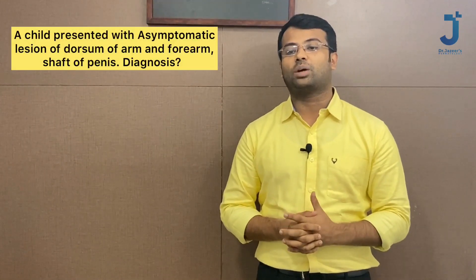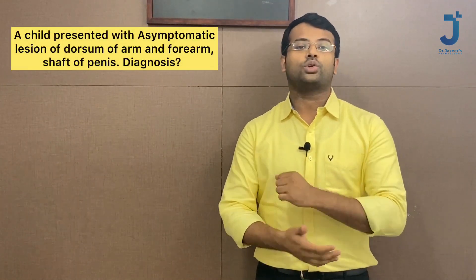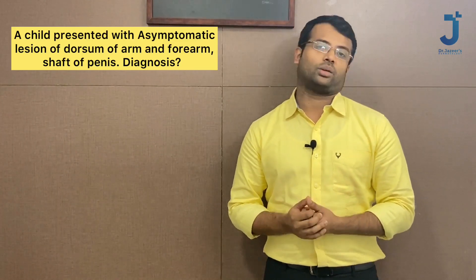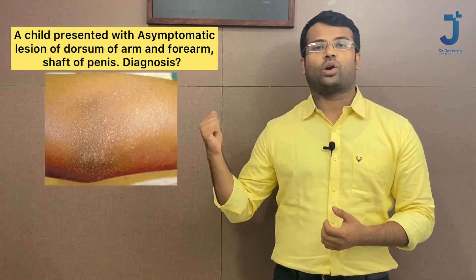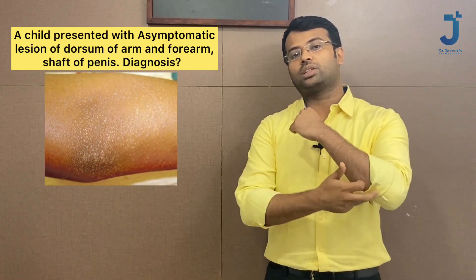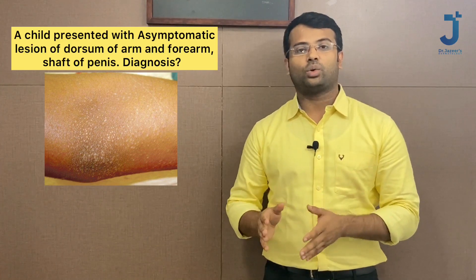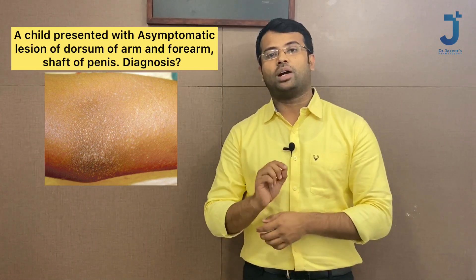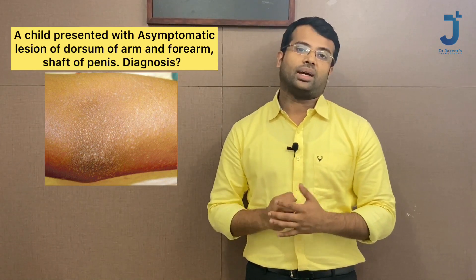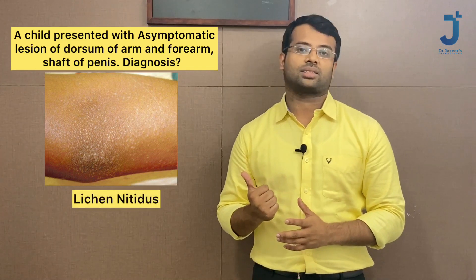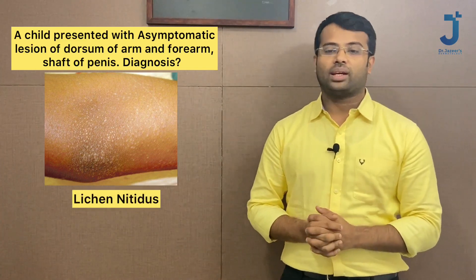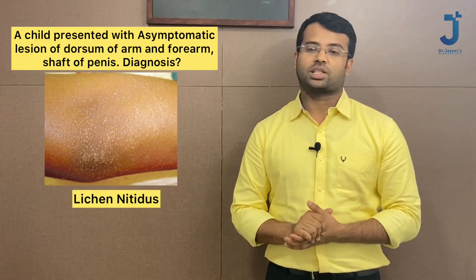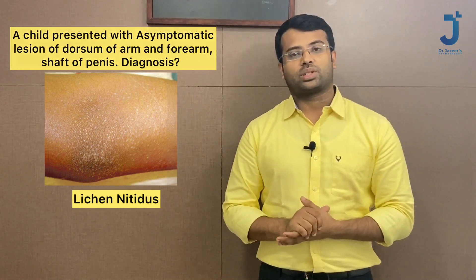The second question: a child presented with asymptomatic lesions over the dorsum of the arms and over the shaft of the penis. In this image you can see multiple tiny bumps over the skin — an asymptomatic presentation with multiple tiny papules. This is called lichen nitidus. The right answer is lichen nitidus — a pretty direct question.